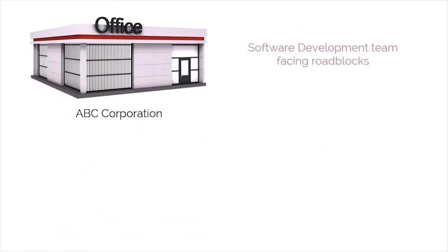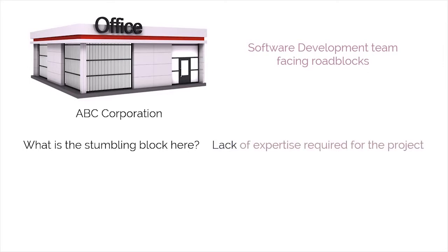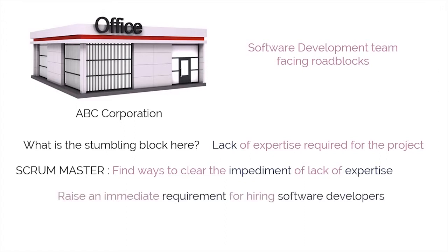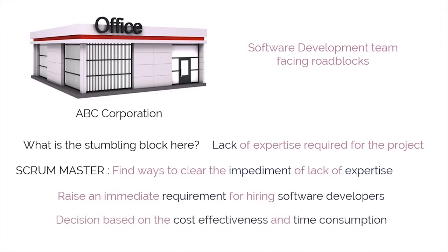To clarify, here's an example. This is ABC Corporation. The software development team at ABC is facing roadblocks lately because they are unable to live up to the set standards of a project in terms of quality. The stumbling block is a lack of expertise required for the project, which in turn leads to delay. This is where the Scrum master pitches in — the Scrum master will focus on finding ways to clear this impediment. The Scrum master is either going to raise an immediate requirement for hiring software developers with the required expertise, or make an arrangement for training the existing staff, making a decision based on cost-effectiveness and time consumption.